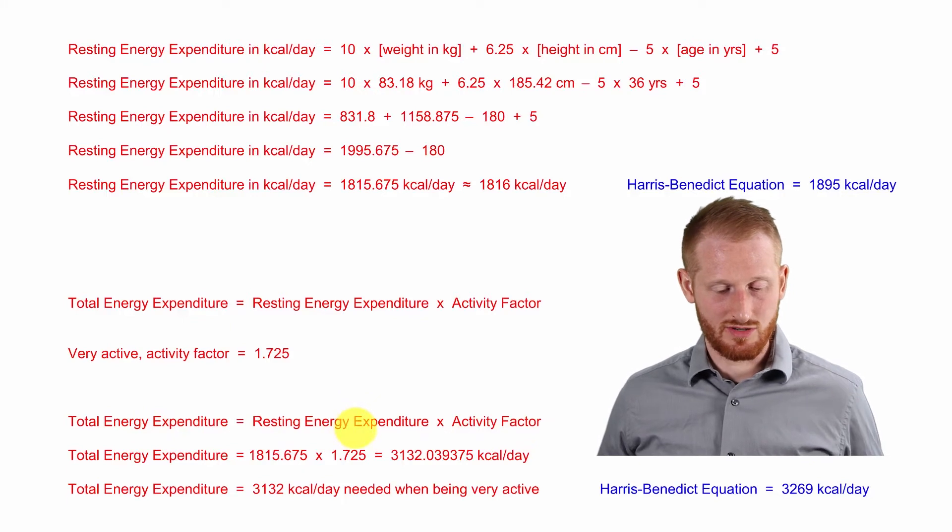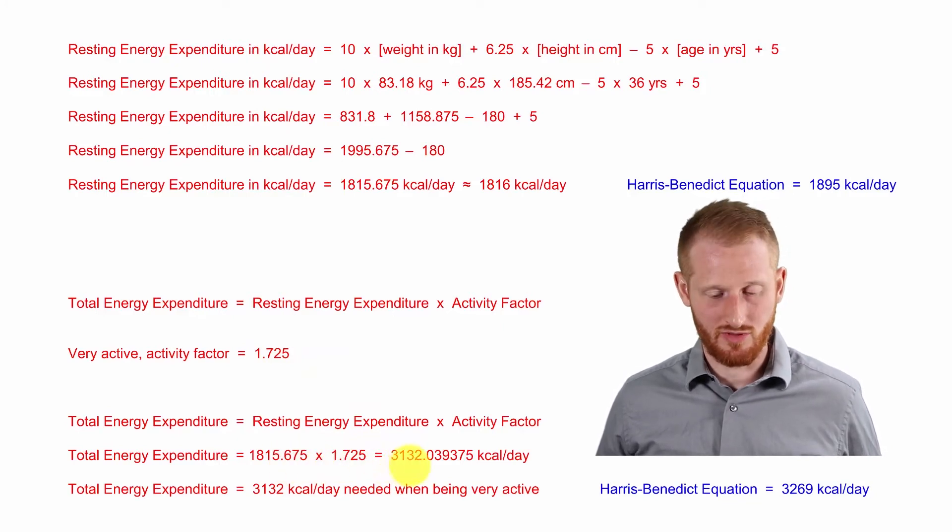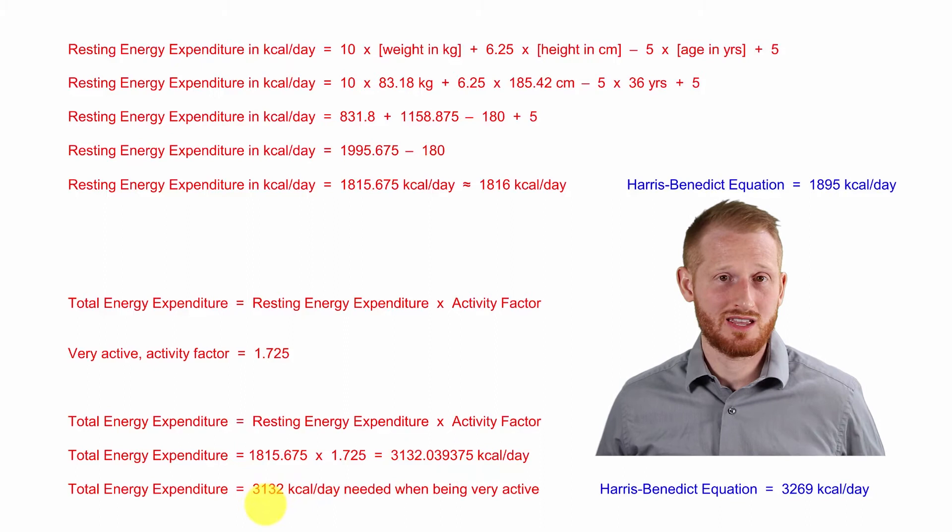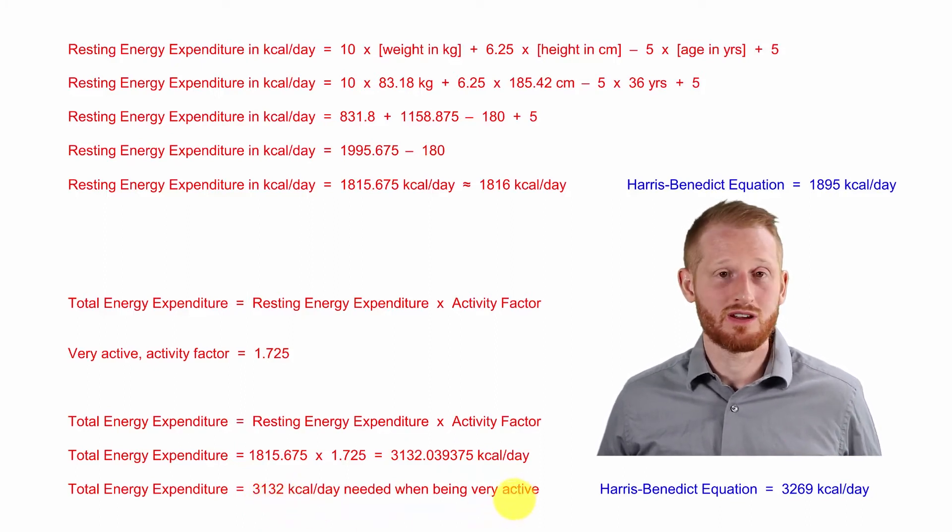Here is that total energy expenditure equation again. So resting energy expenditure times the activity factor. Plugging all this in, so taking this resting or basal metabolic rate and plugging it in down here, just keeping all the decimal places for now, plugging in the activity factor, multiply those two together, you get 3,132 and then a bunch of decimals after that. Rounding that off, it's just 3,132 kcals per day in order to maintain body mass while being very active.